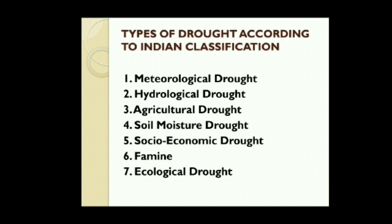Third, agriculture drought — a drought related to reduction of crop yield and soil moisture. Next, soil moisture drought — this type of drought affects soil moisture which does not support crop growth. Fifth, socio-economic drought — a drought which reduces availability of food and income, causes crop failure, and affects social security. Sixth, famine — it occurs when large-scale collapse of food supply occurs. And lastly, ecological drought — it takes place when the productivity of a natural ecosystem fails and causes environmental damage.